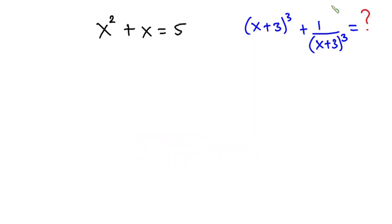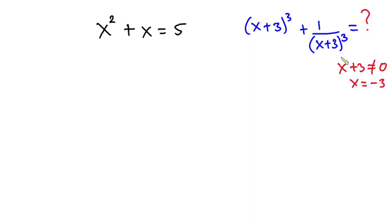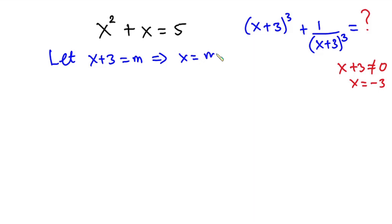Now let's get started. First, considering this whole expression, x+3 is never equal to zero. Why? Because if x+3 equals zero, then x equals negative 3, which would make the denominator zero and the whole expression indeterminate. So we won't allow that. Now I'm going to let x+3 equal m, which implies x equals m minus 3.